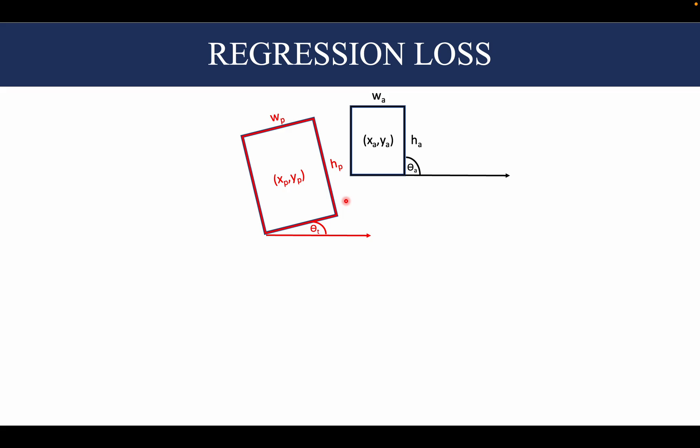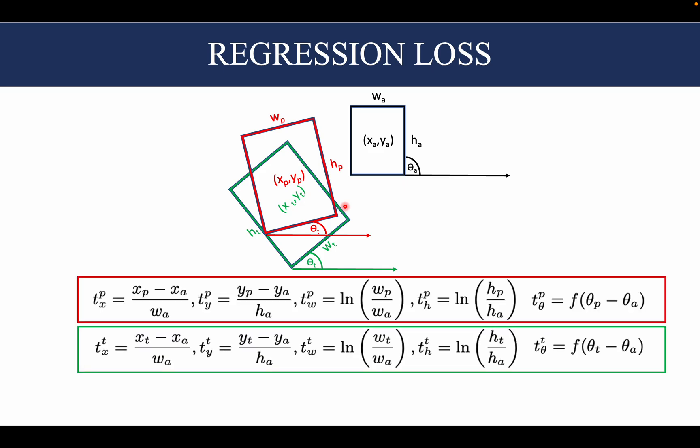Consider the red box to be a predicted bounding box and the green one to be a ground truth bounding box. We now need to compute these five parameters for both the predicted and the ground truth bounding boxes.